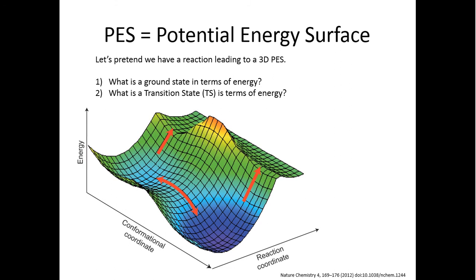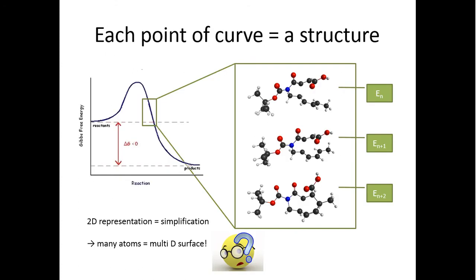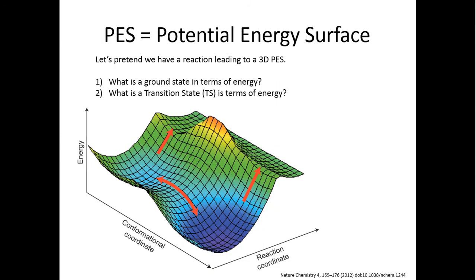If we pretend that we're having a reaction that can be described by a three-dimensional surface, if we go from this curve to a three-dimensional representation of the energy, then this surface will be called potential energy surface, PES. What is the ground state on this graph?